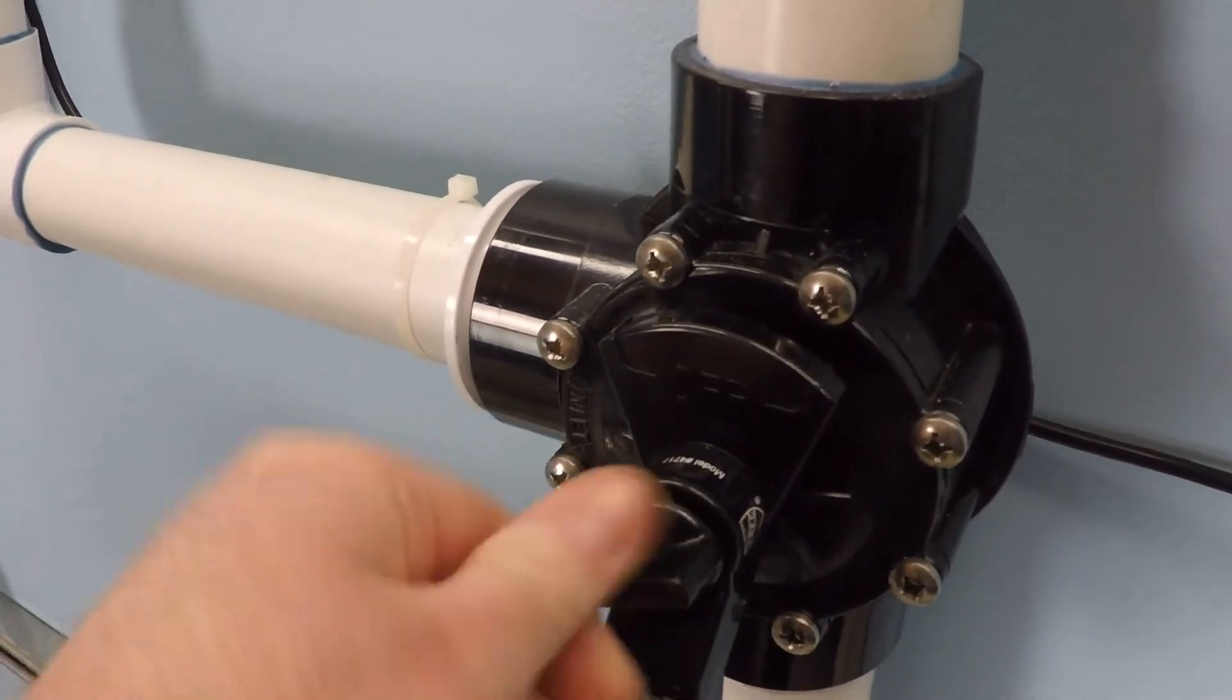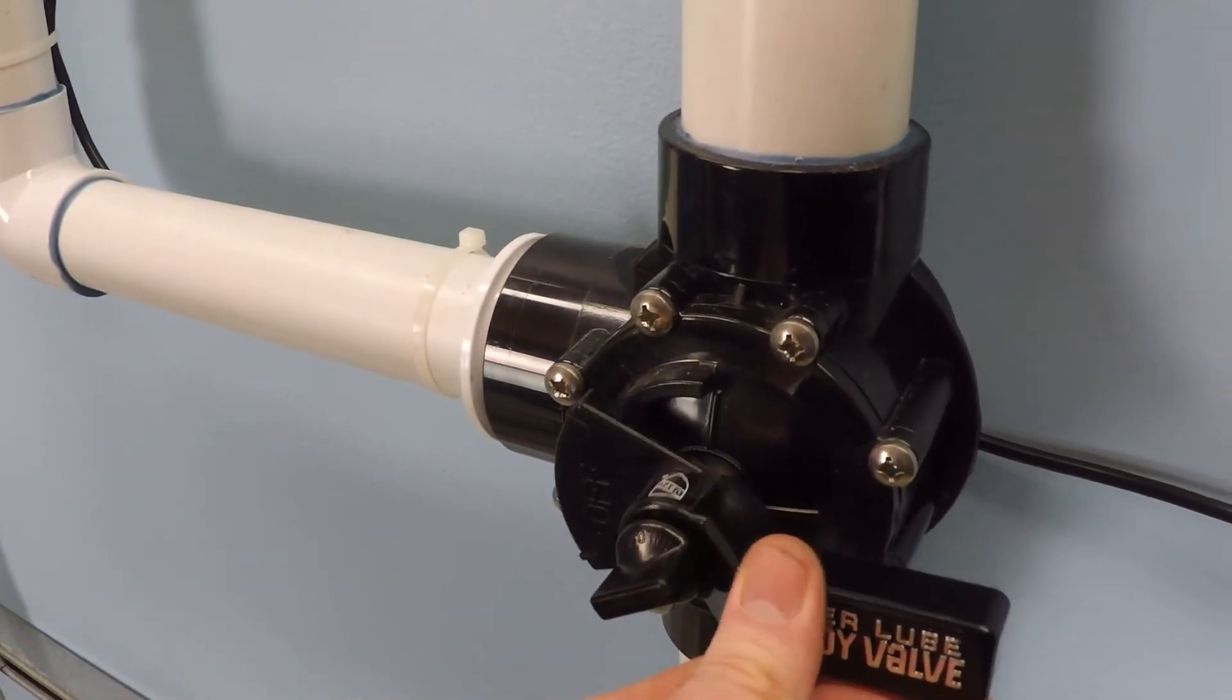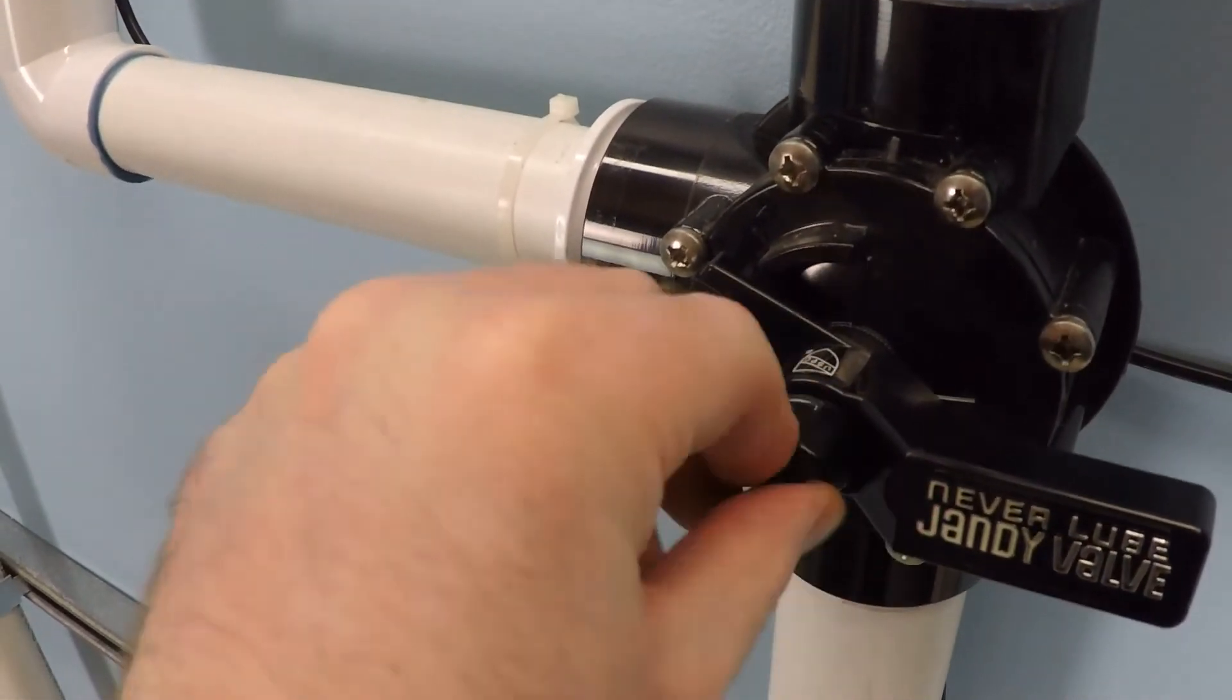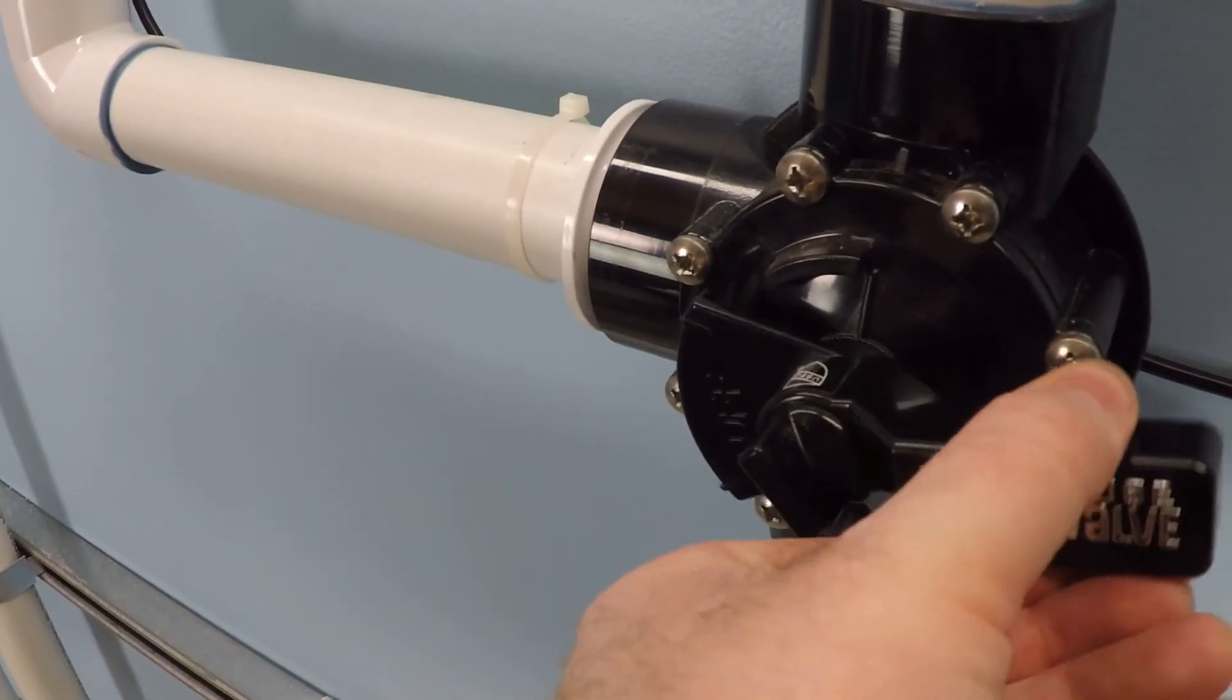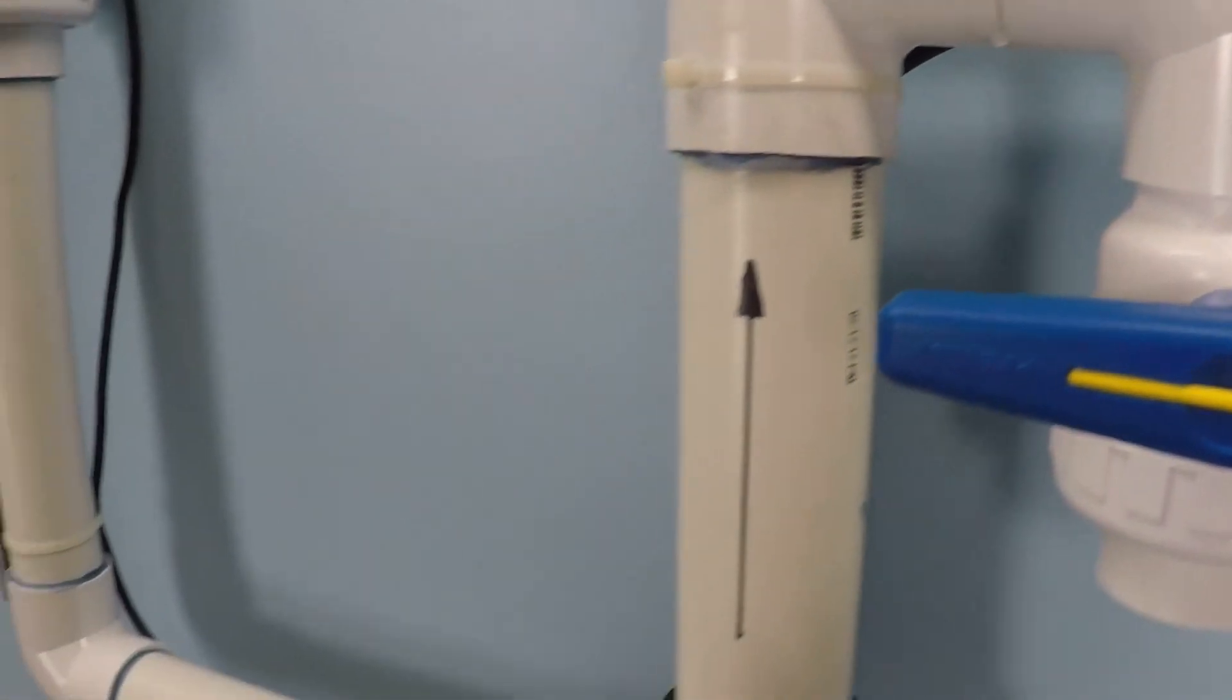The way that diverter valves work is you loosen this nut, you lift the handle, and then you make your turn, push the handle back down, and tighten the nut. And that's how you would turn a diverter valve and a ball valve on a swimming pool system.